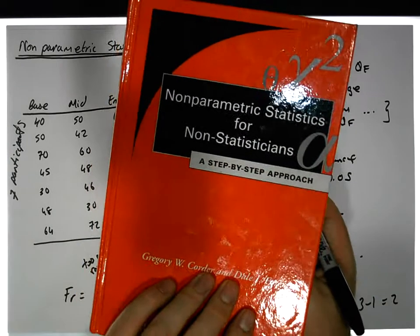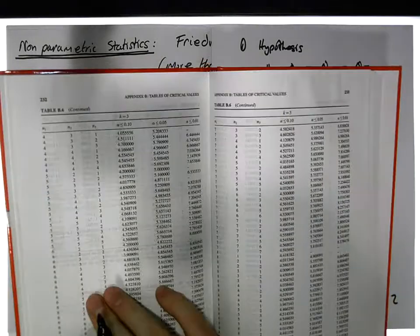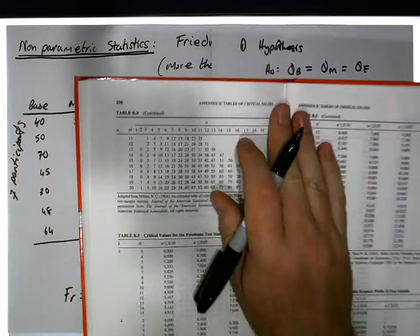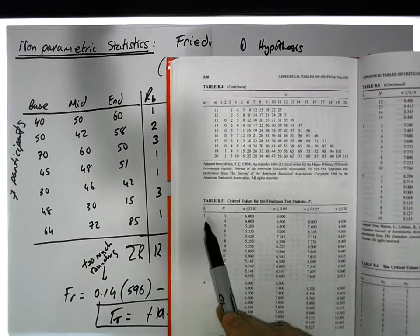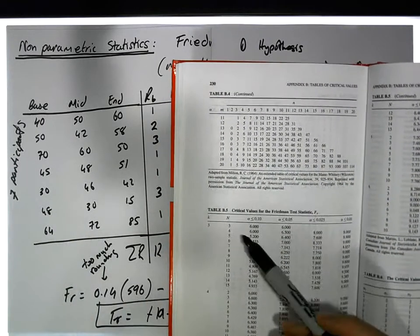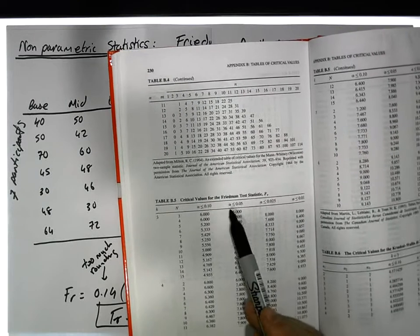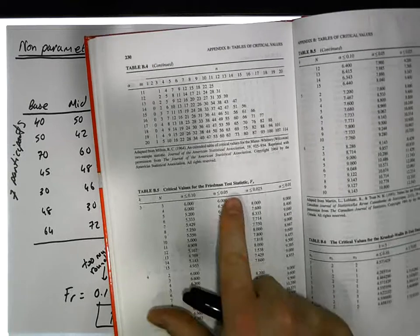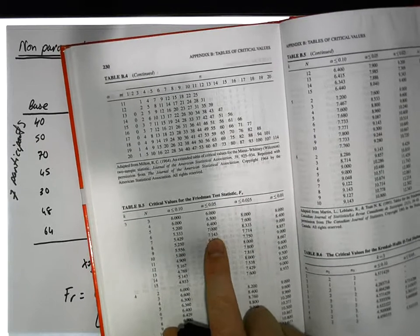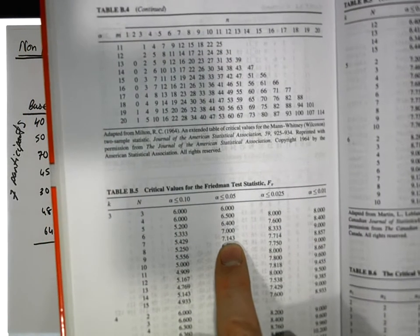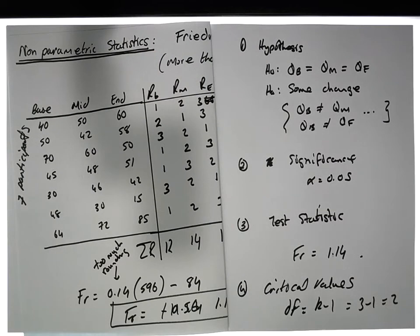I'm using the non-parametric statistics textbook by Quarton and Form to look up the Friedman test tables. Here are the critical values for Friedman's test statistic. We have k equals 3 groups, and n equals 7 levels. With an alpha value of 0.05, seven levels and three groups gives us a critical value of 7.143.